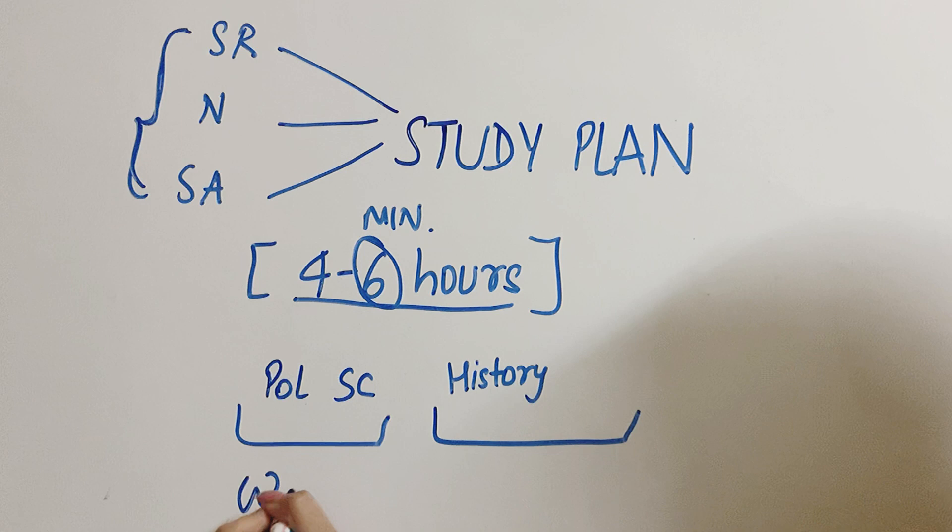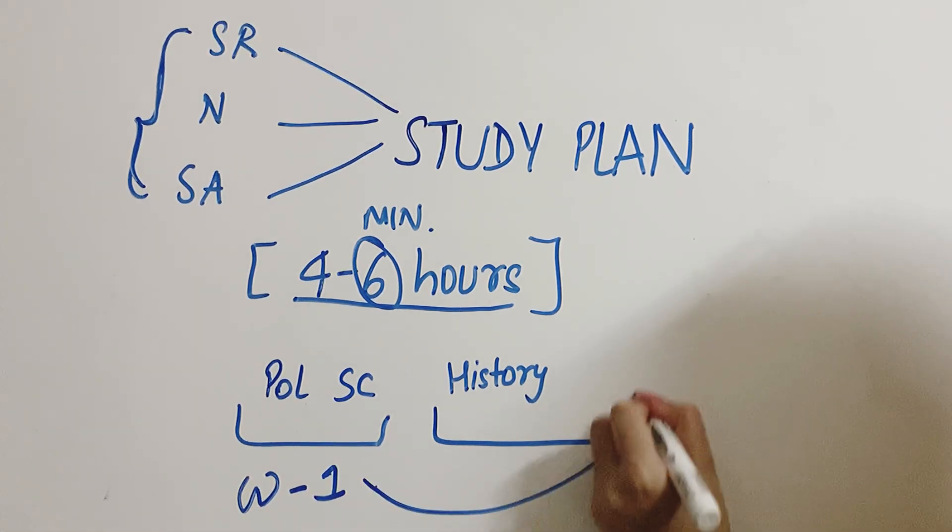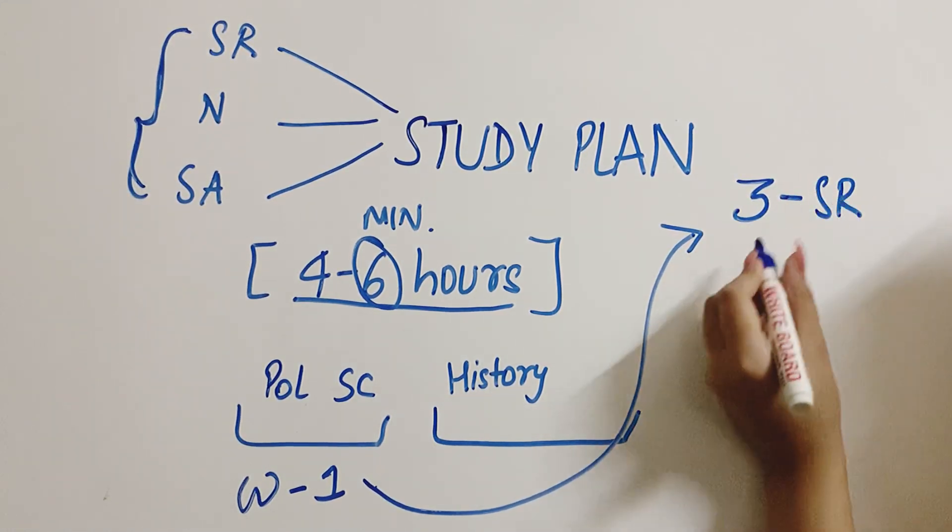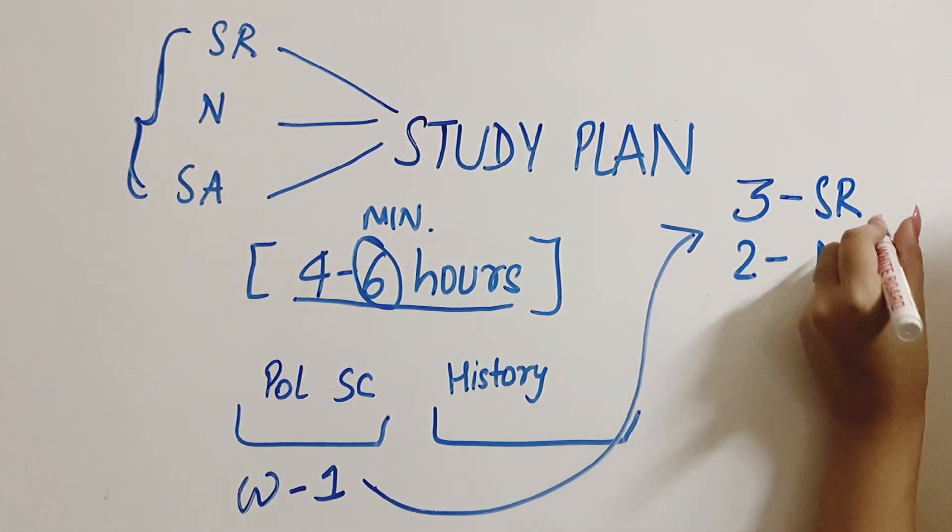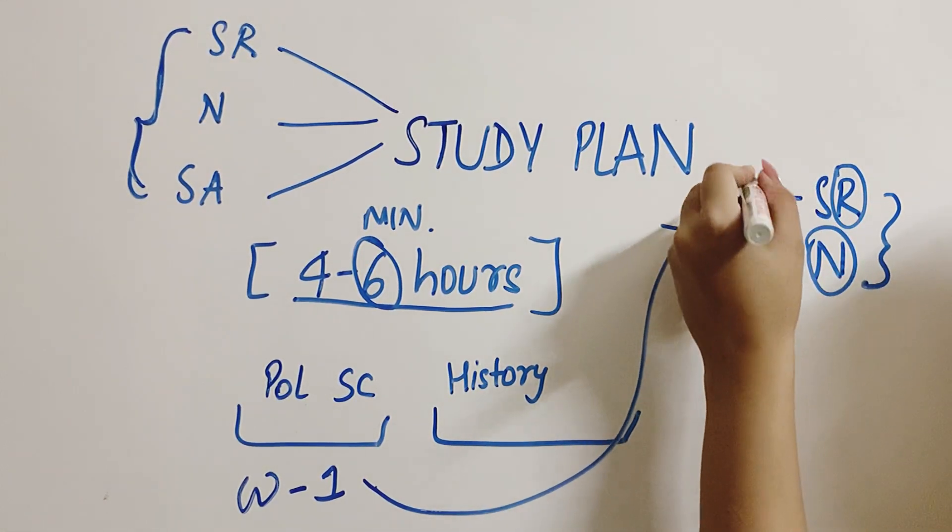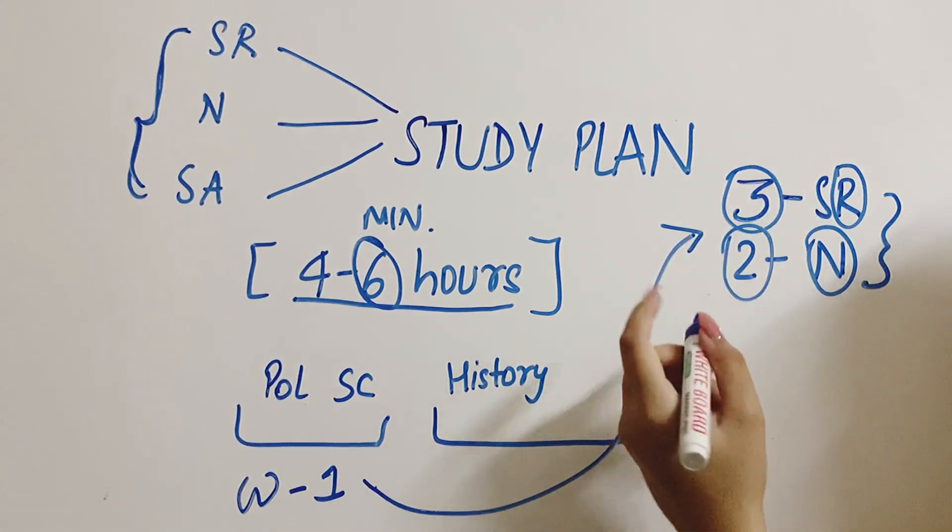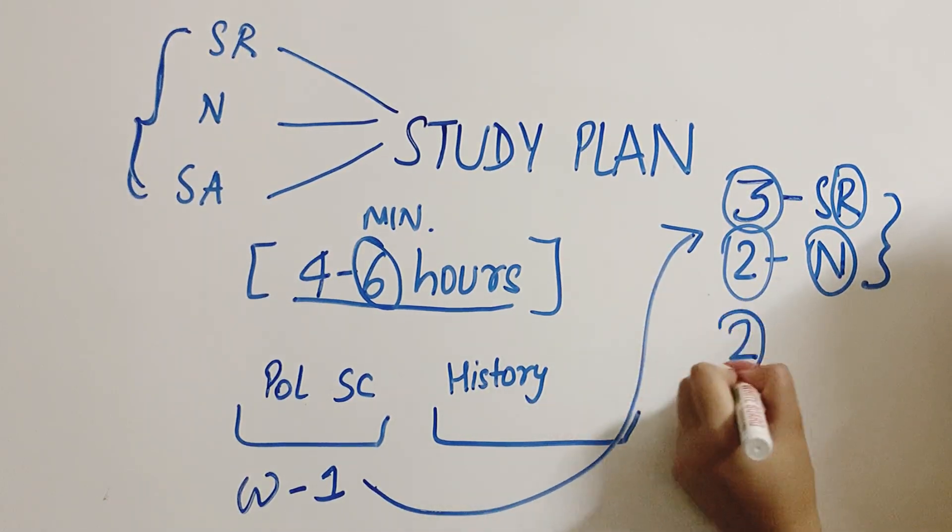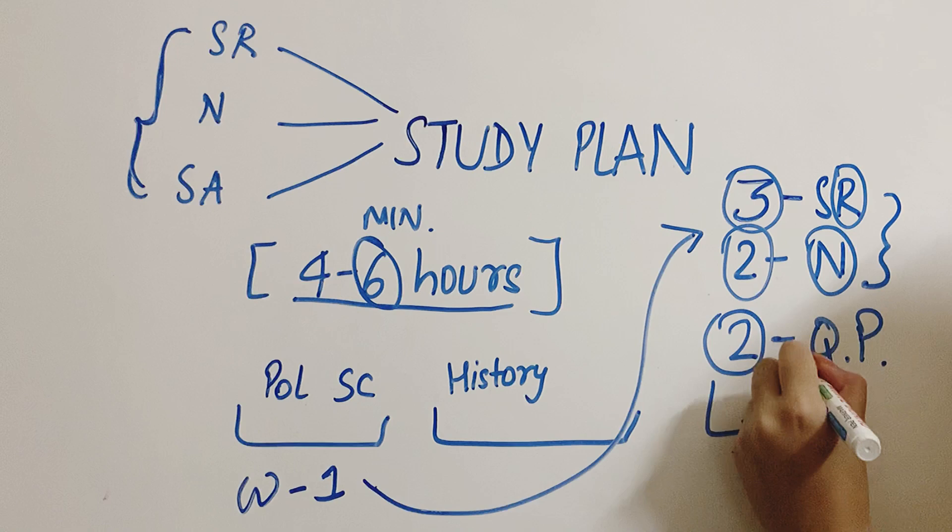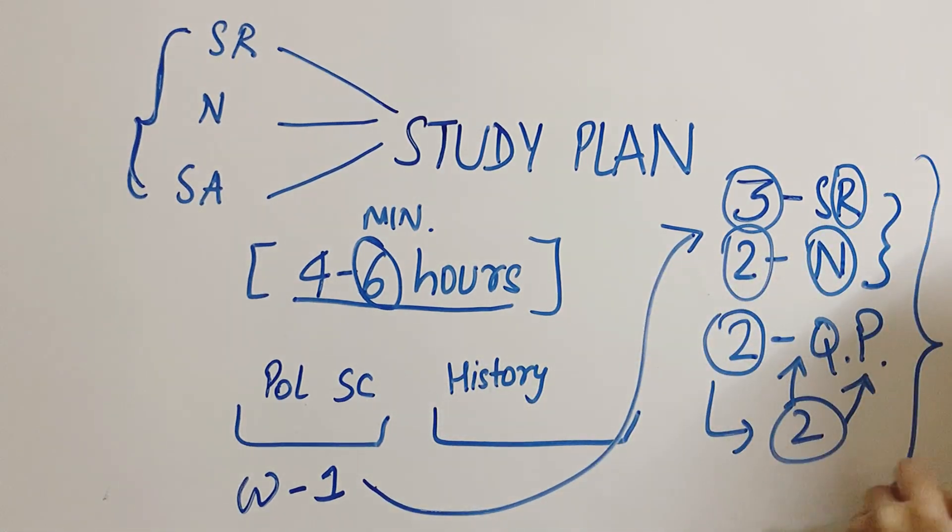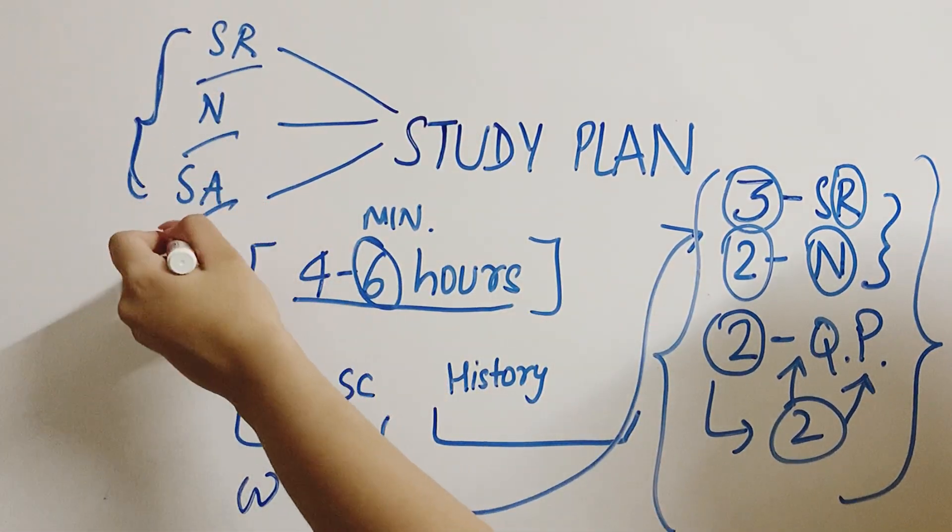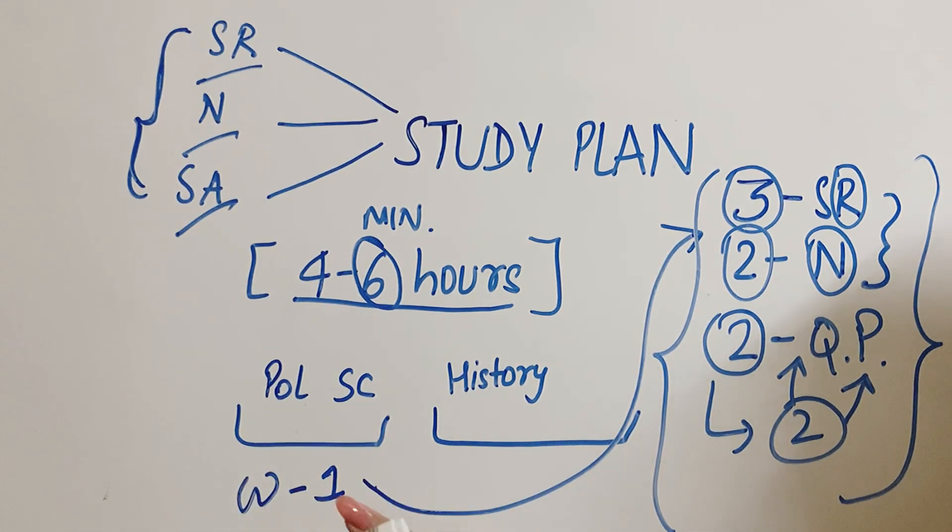So let's say, we take Political Science for week 1. How will we divide this week? Our first 3 days will be for speedy revision, then 2 days for notes, or you can collaborate this. Read one chapter, then along with it read notes also. So total in 5 days, we will cover our syllabus, and the remaining 2 days, in those we will attempt question papers. Two. One day one question paper, second day another. This is how we'll break our week into all three things: speedy reading, notes, and self analysis.